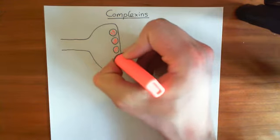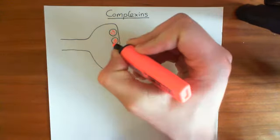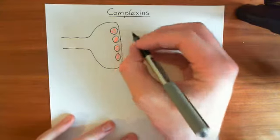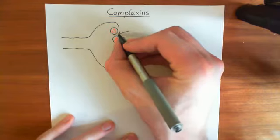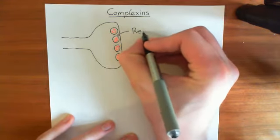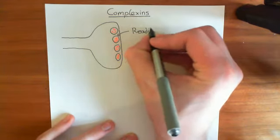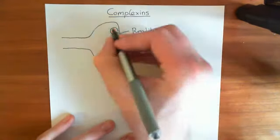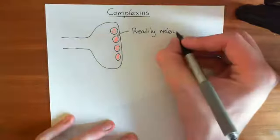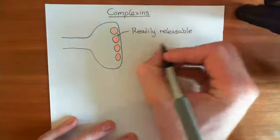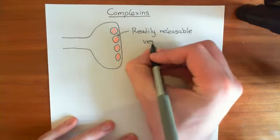We need to first look at the interactions which allow synaptic vesicles to dock at the presynaptic membrane. Synaptic vesicles which are docked at the presynaptic membrane are known as the readily releasable vesicle pool. So it's a great store of synaptic vesicles, and this store is known as the readily releasable vesicle pool.